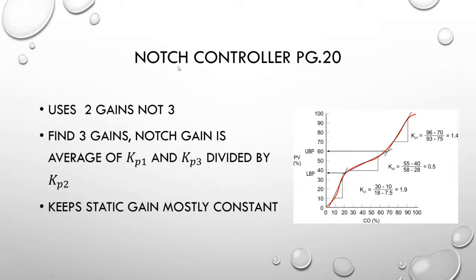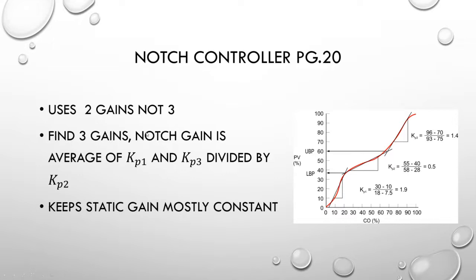Here's one called a Notch Controller, incredibly similar to the previous example. The difference comes down to using two gains instead of three. We find three gains just like in the previous example, and derive something called the Notch gain, which is an average of KP1 and one gain divided by another gain. It gives us a number we can multiply our controller gain by in order to make a consistent operating gain applied throughout the operating range. This keeps the static gain mostly constant.